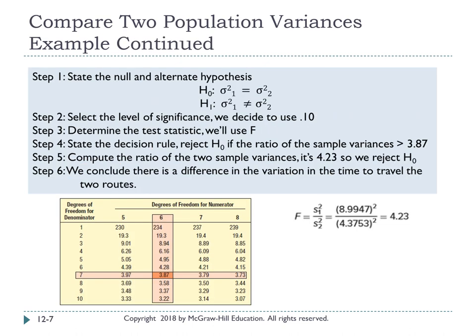To answer the question, we write the six steps of hypothesis testing. Step one: state H-null and H-one. H-one is that the variance in sample 1 is not equal to the variance in sample 2. H-null is the opposite, containing the equal sign: variance in sample 1 equals variance in sample 2. You can also write the hypothesis in words: there is a difference in the variations of the driving times for the two routes.